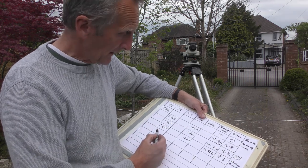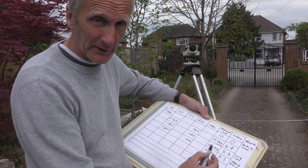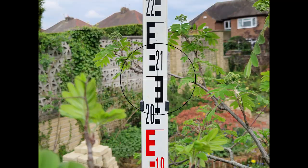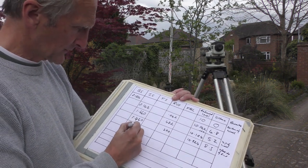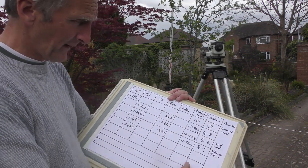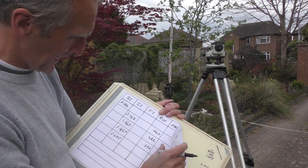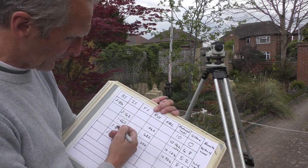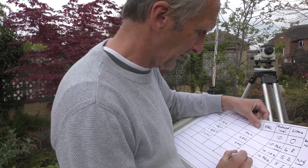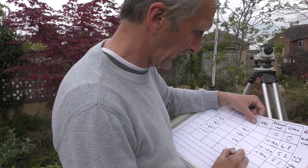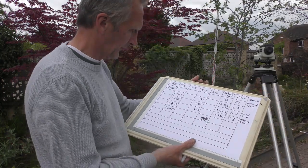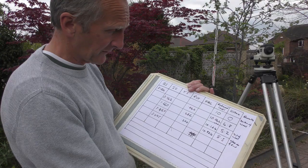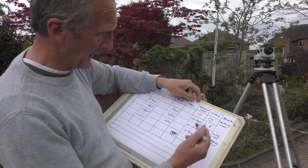Now this next one is going to be a drop because the ground goes down, so it's going to go into a fall and I'll have to subtract it. The reading is 2.095. Doing the maths — take that away from the one above — that's actually a fall of 0.635. So we take 0.635 away from 10.324 because it's a fall.